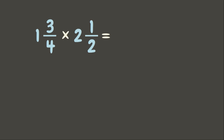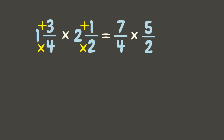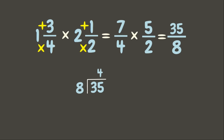Now let's go back and change each mixed number into an improper fraction. 4 times 1 is 4, plus 3 is 7, over 4. Next, 2 times 2 is 4, plus 1 is 5, over 2. Now we can multiply them: 7 times 5 is 35, and 4 times 2 is 8. Our answer is in improper form, so we convert it into a mixed number. 35 divided by 8 is 4, with 4 times 8 being 32, and 35 minus 32 is 3. Our final answer is 4 and 3 eighths.